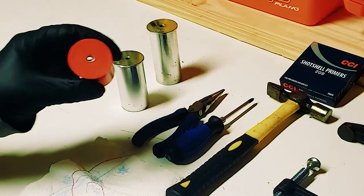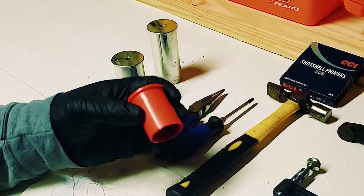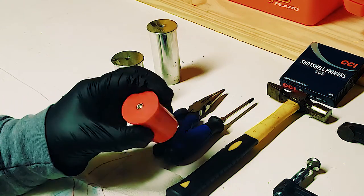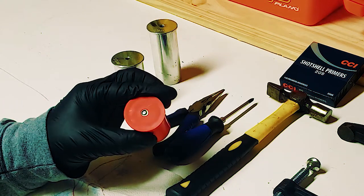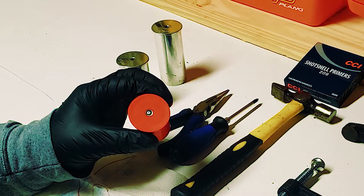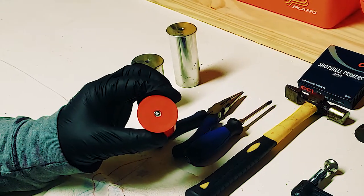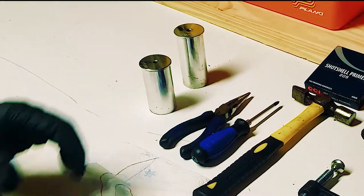Instead of making a separate video on removing a used primer, I decided to start here since it's a very quick and easy step. You could use a table vise, a block of wood with a small hole, a roll of electrical tape—you just need something that you can set the base of the hull on top of with a hole for the used primer to fall through.